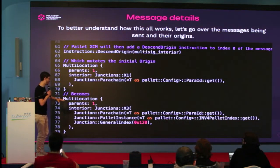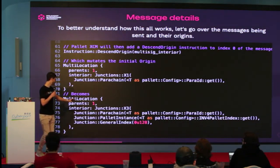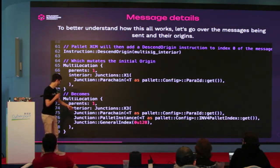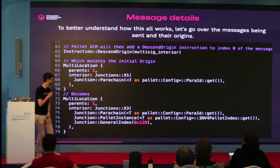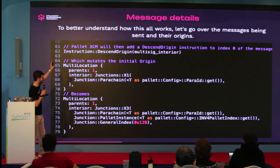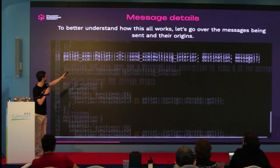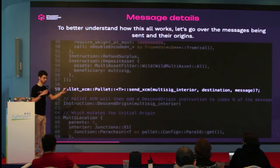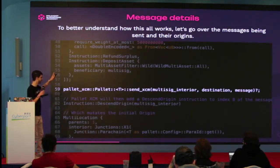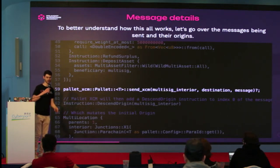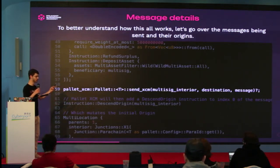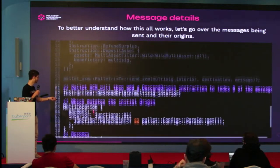You basically append the multi-sig interior that was passed to the XCM. It will add that to the descend origin, and then the descend origin instruction will be removed from the instruction list and will mutate the origin to include the full multi-location with the multi-sig ID.